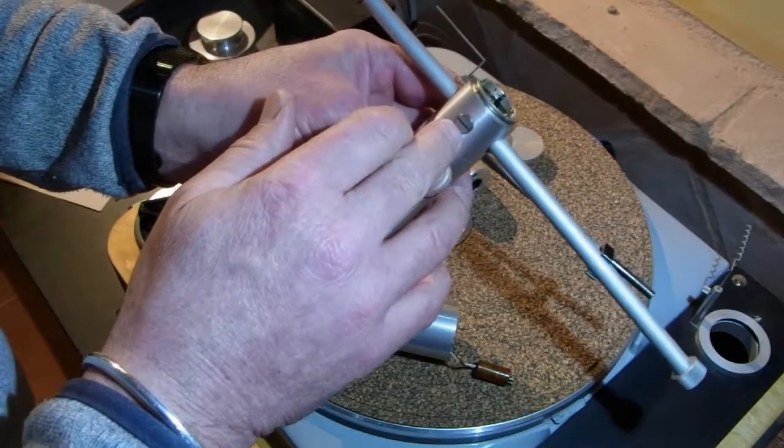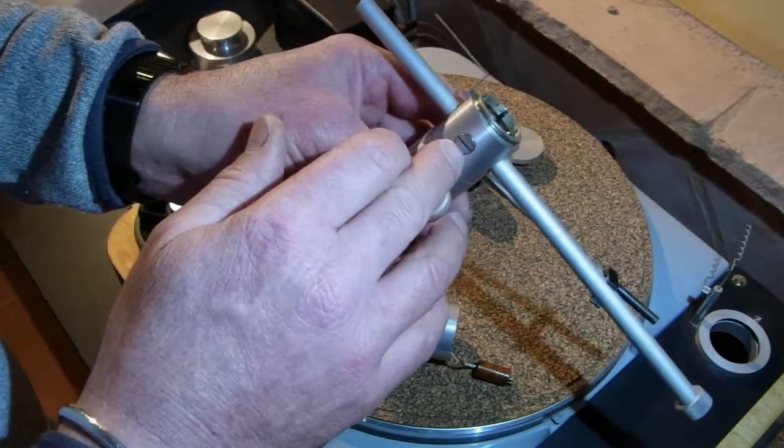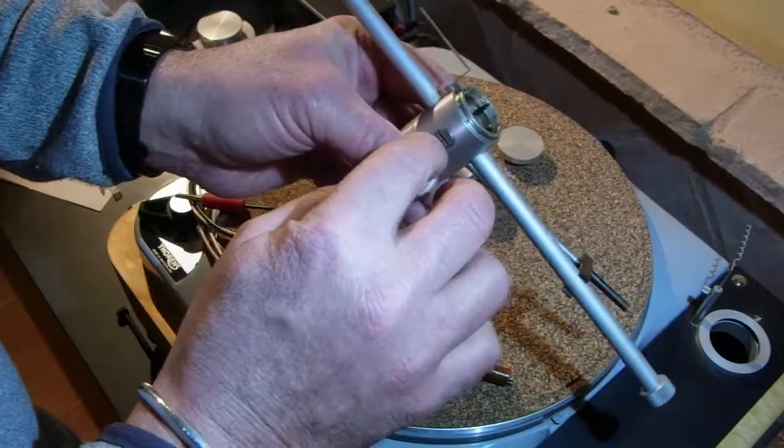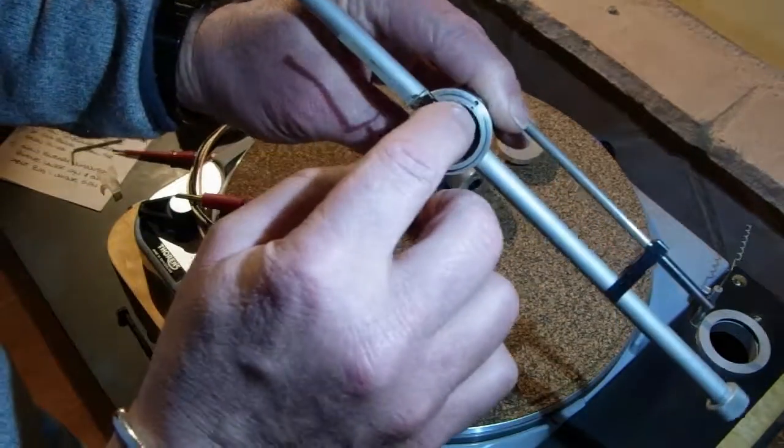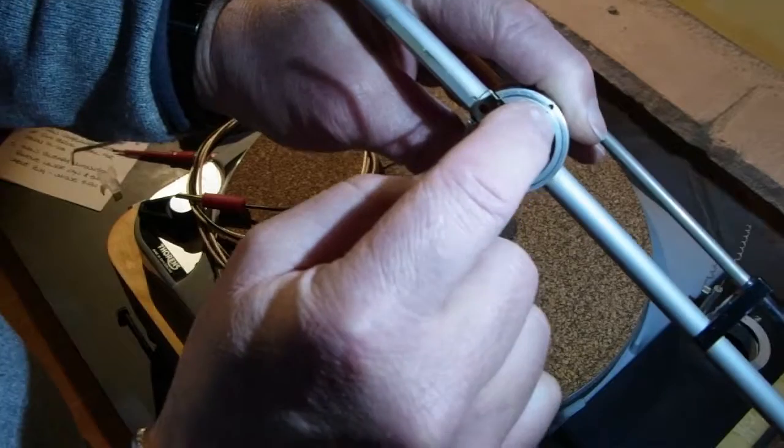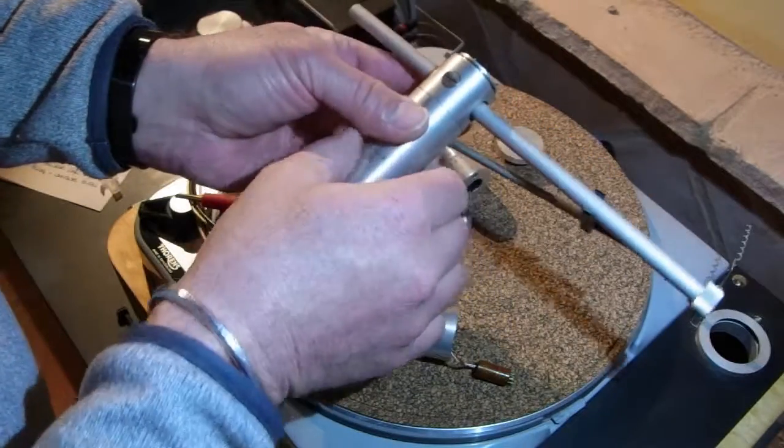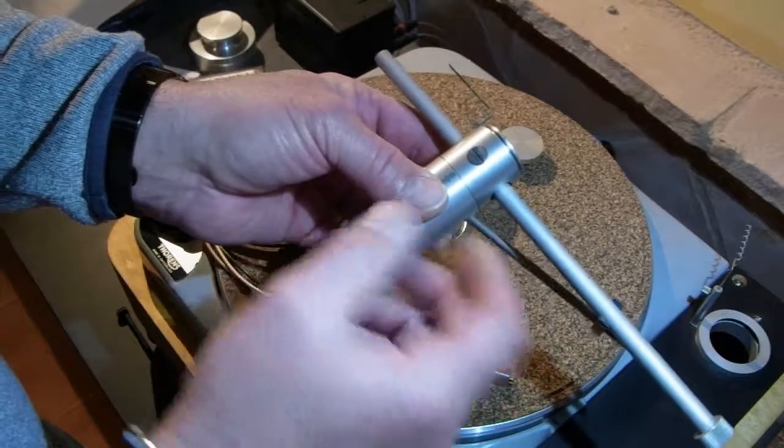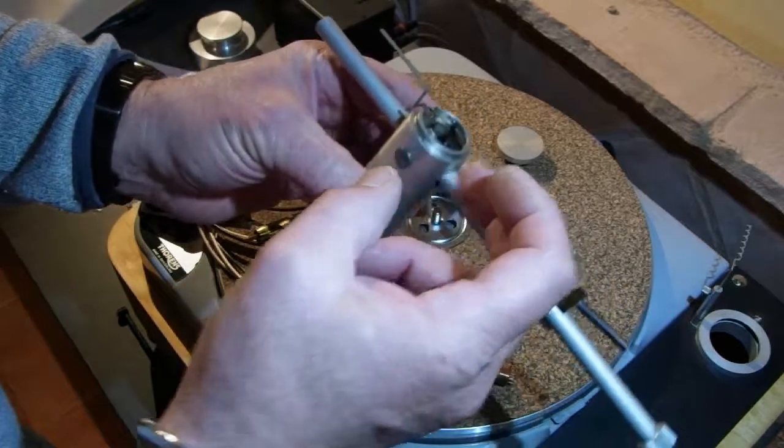This tonearm uses ball races in bearing cups. This is a bearing cup here. Once it's been adjusted, it's secured with a small set screw there. This is unlike the Lenko L75 tonearm, which uses knife edge bearing in rubber V-blocks.